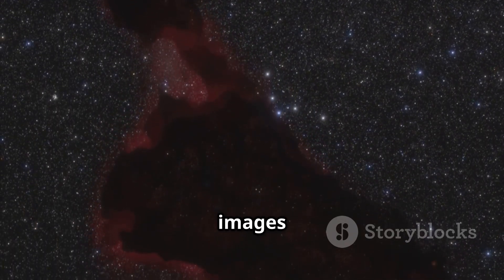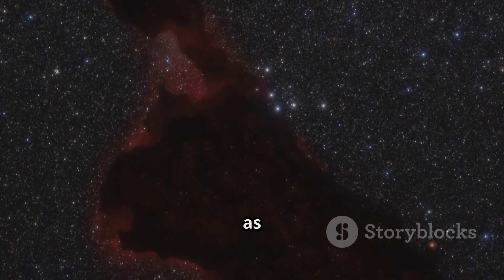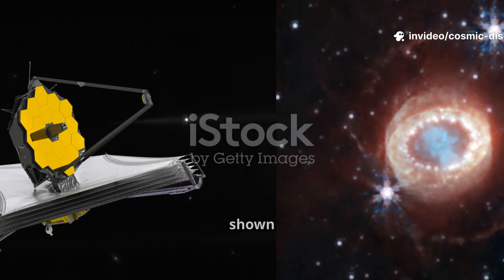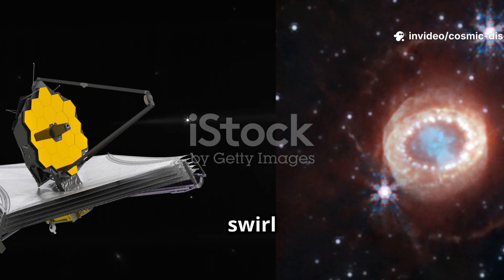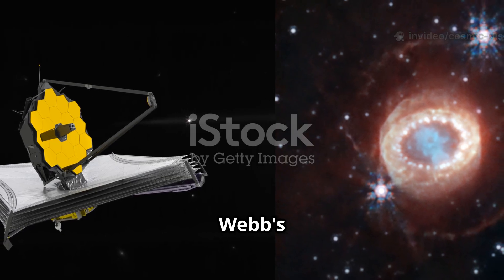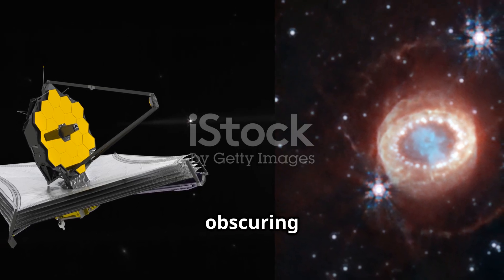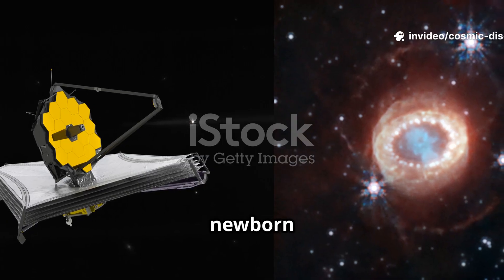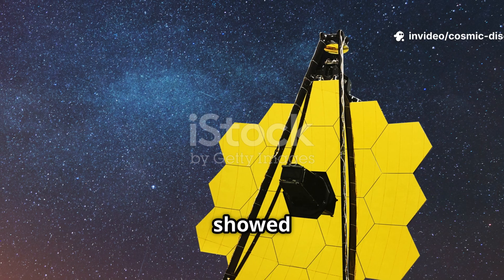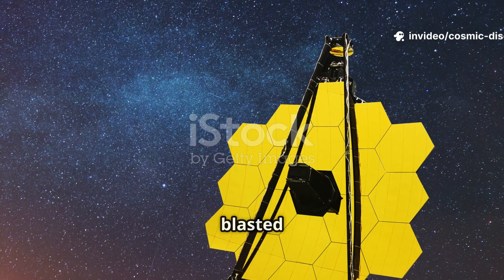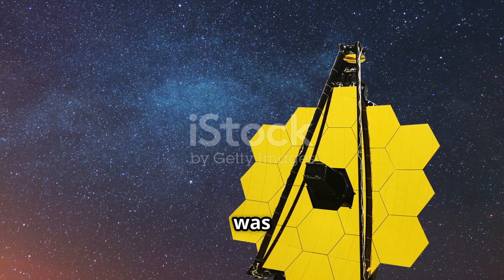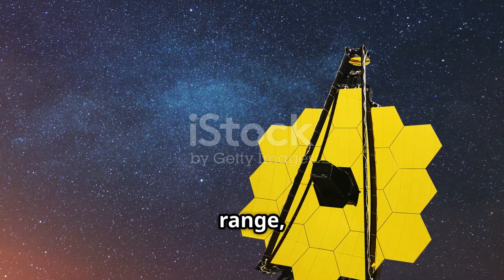Another of the first images showed a stellar nursery known as the Carina Nebula. Previous images from Hubble had shown this region as a beautiful swirl of gas and dust, but Webb's infrared vision pierced through the obscuring clouds, revealing hundreds of previously-hidden, newborn stars. It showed jets of gas and dust being blasted out by these young stars, sculpting the nebula from within. It was like looking into a cosmic mountain range, with cliffs of gas and glowing valleys where the next generation of stars is igniting.